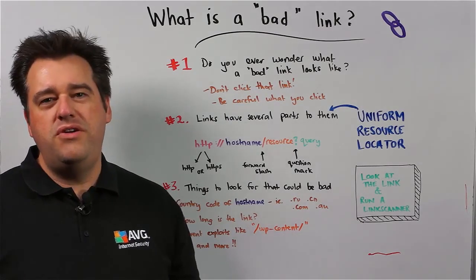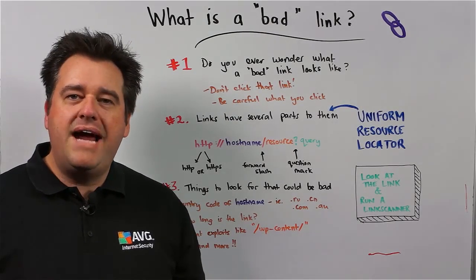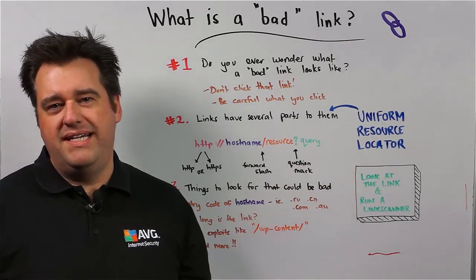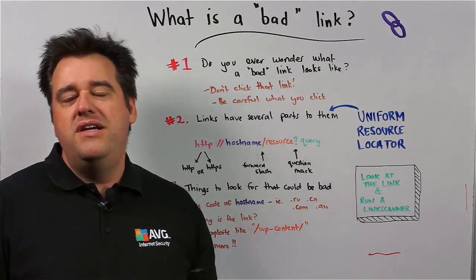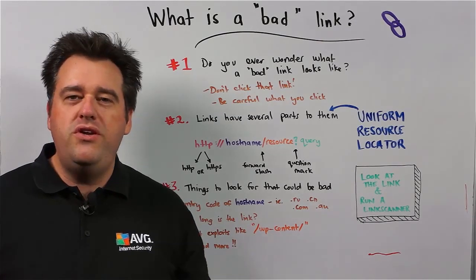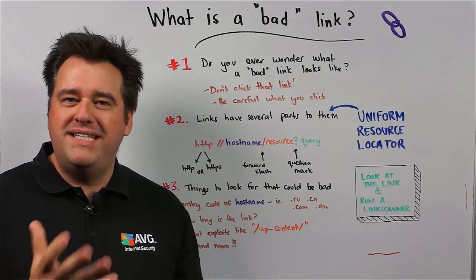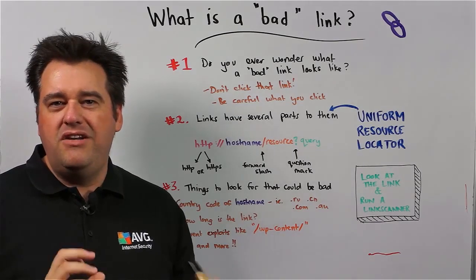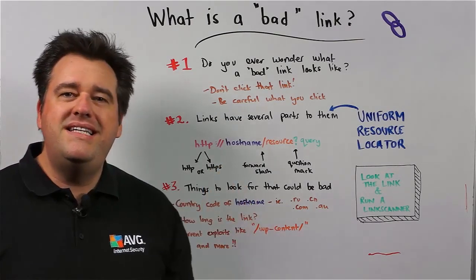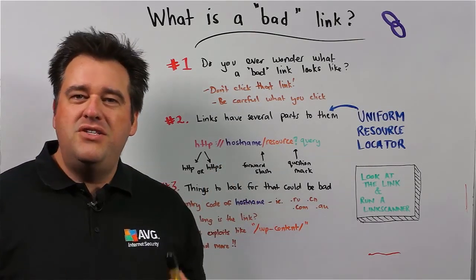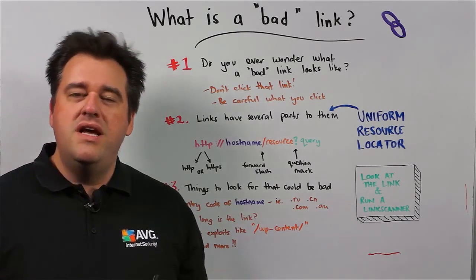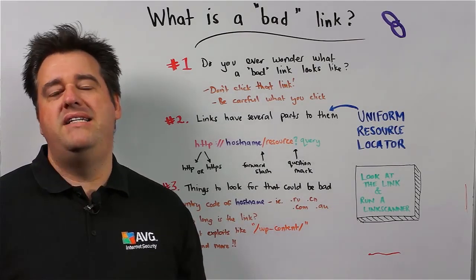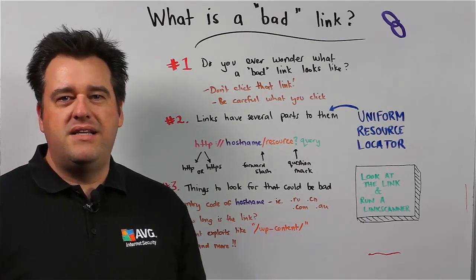Links, also known as URLs, which is an acronym for Uniform Resource Locator, are things that we click on to take us to websites. I'm sure that's how you got here. But let's look at the individual parts of a link to understand how they're constructed so that we can better protect ourselves in case we need to click on them.